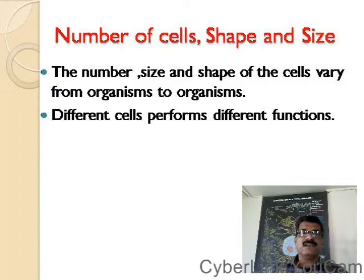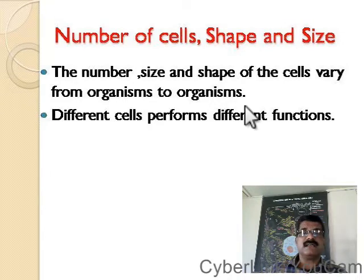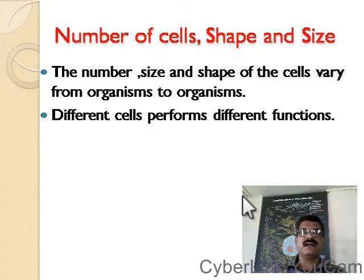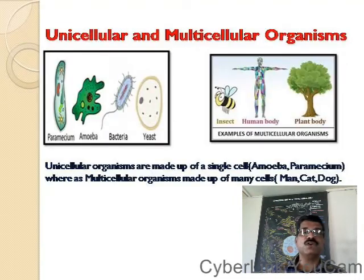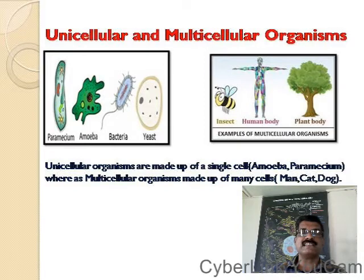There are a large number of cells in each and every organism. The number of cells varies from organism to organism. Consider very small organisms like amoeba having only one cell, but the elephant or the blue whale have a large number of cells. The shape and size of cells also varies. Based on the number of cells an organism possesses, we can classify organisms into two types: unicellular and multicellular organisms.